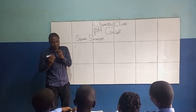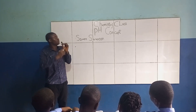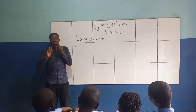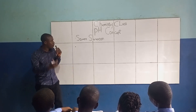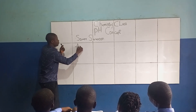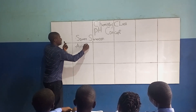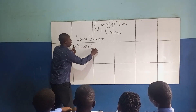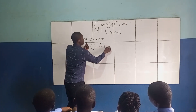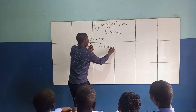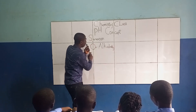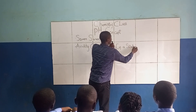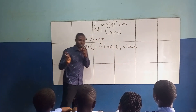It must be noted here that the pH concept, or pH, measures the degree of acidity or alkalinity of a solution. So the pH measures the degree of acidity or alkalinity of a solution.